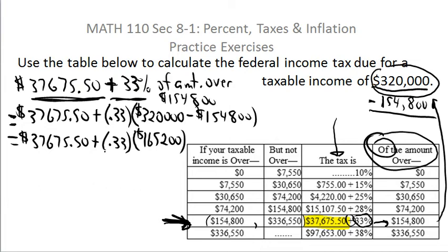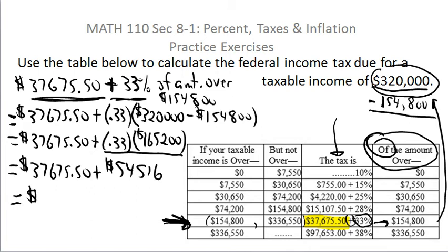Now order of operations says you do the multiplication first. So now I'll say the answer is $37,675.50 plus, now you take $165,200 times .33 and hit equal, and you will end up with $54,516. And now I simply add those two numbers together and you'll end up with $92,191.50.